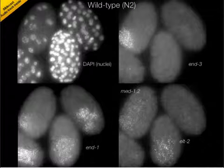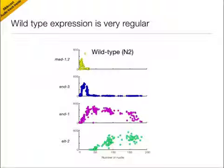We then sought to determine the source of ELT-2 expression variability by using multicolor FISH to measure expression of all the components of the gut specification pathway simultaneously. Here we show some wild-type embryos in which we measure the expression of END-3, END-1, MED1 and MED2, and ELT-2 all on an embryo-by-embryo basis. The number of nuclei serves as an indicator of the developmental stage of the organism. By imaging large numbers of differently-staged embryos, we were able to reconstruct developmental gene expression time courses.